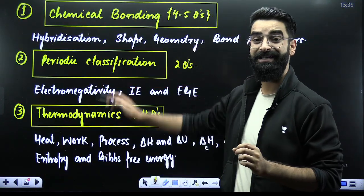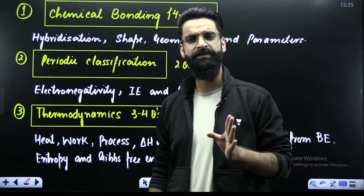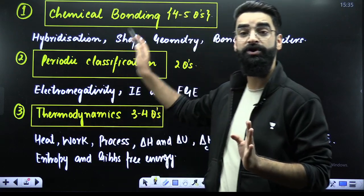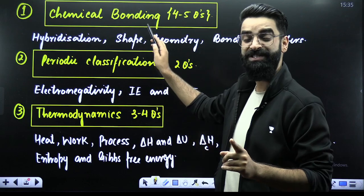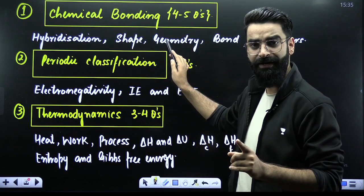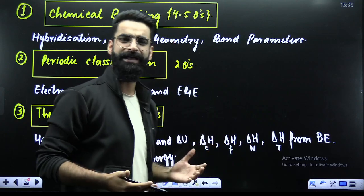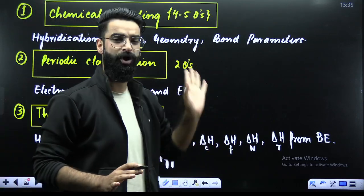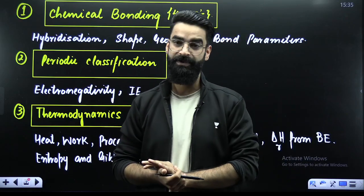Starting from the high-weighted chapters — chemical bonding. In chemical bonding, every year you get four to five questions. The topics are: hybridization, questions based on shape and geometry, and questions based on bond parameters which involve bond energy, bond length, bond strength, etc. These are the short topics from which questions are framed every year in chemical bonding.